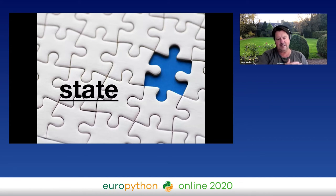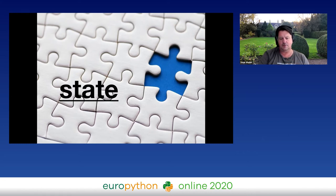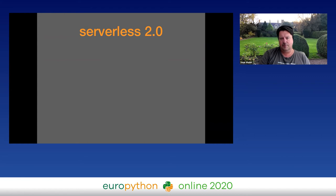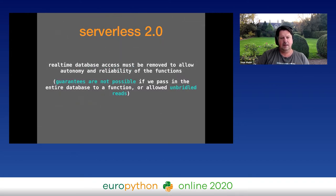So far when we talk about stateless applications, they really are stateful, but that state exists in your database. It's a little unnatural because things in the real world — like us, our cars, our phones — have a current state; they're not separate from their state. That's a problematic concept from the beginning, but something we're very used to as developers. So for serverless 2.0, what we propose is that real-time database access has to be removed to allow the autonomy and reliability of our functions and to reason about them in a uniform way.